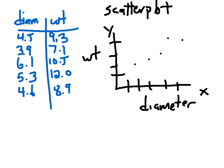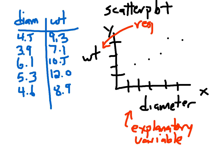A little bit of terminology here. In this case, we call the variable on the x axis the explanatory variable. The explanatory variable is just the variable that we choose to plot on the x axis. In this case, diameter is the explanatory variable.